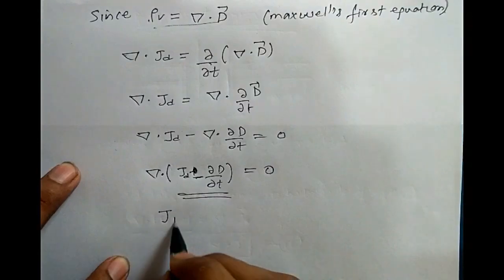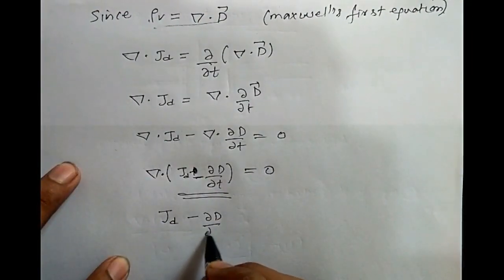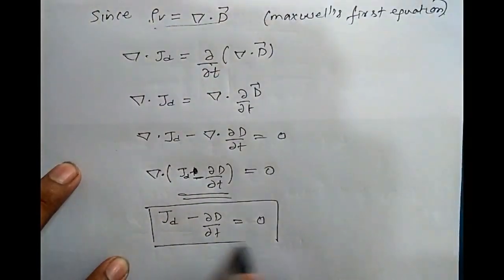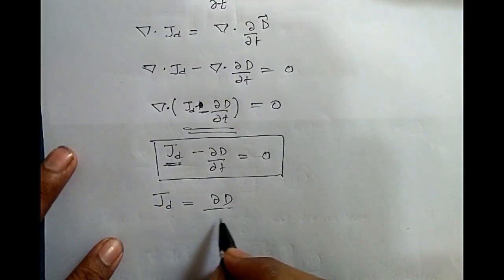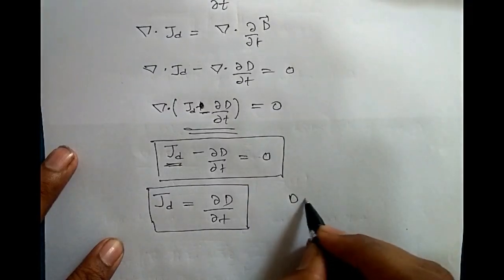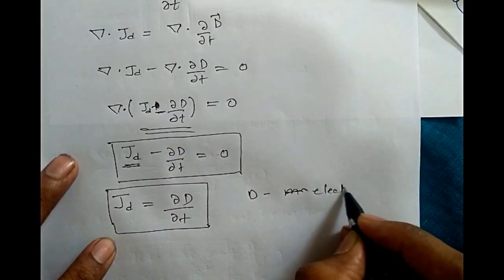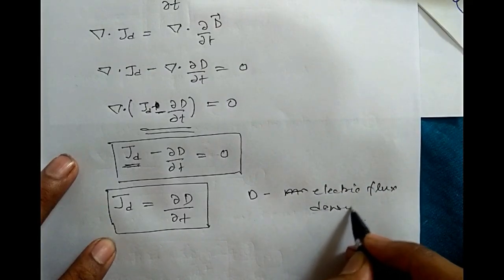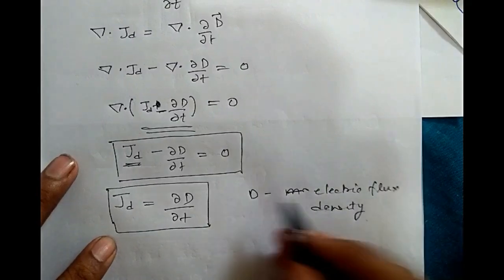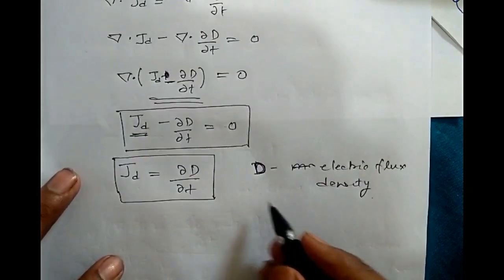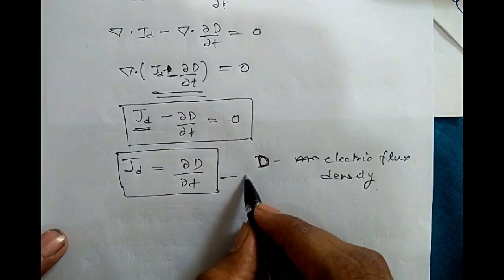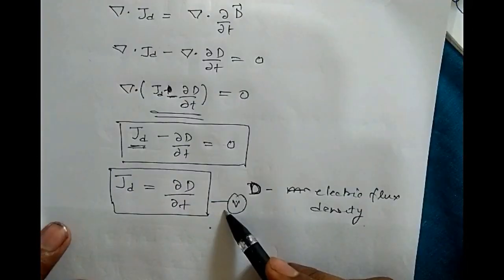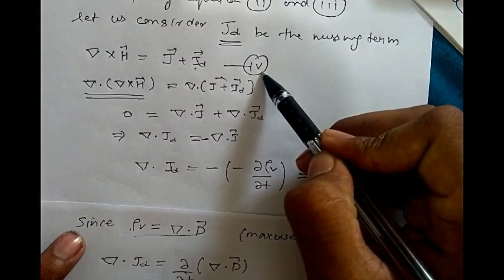So J_D minus del D by del t equals zero. This was our missing term which we were trying to find. Therefore J_D equals the partial derivative of D with respect to time, where D is electric flux density — the electric field lines per unit area. This is our missing term equal to J_D. Consider this as equation number five. Now put equation number five into equation number four.